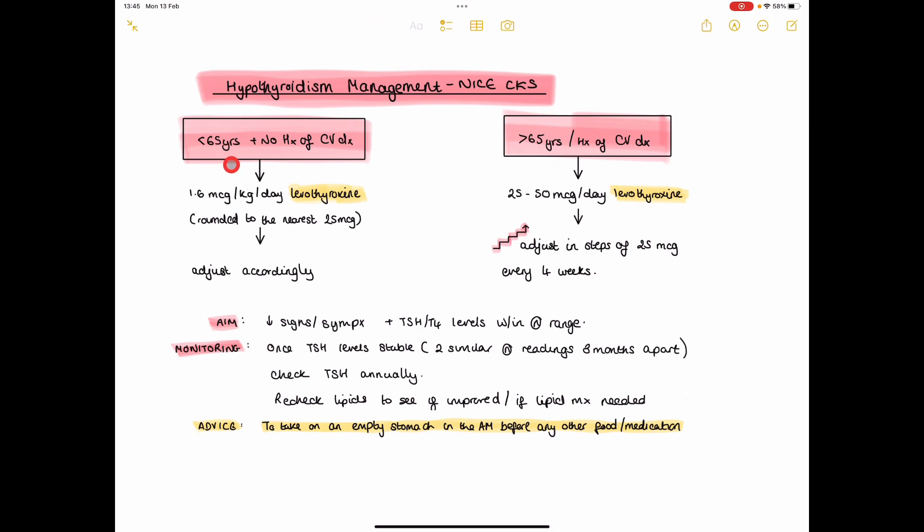If the patient is less than 65 years old and has no history of cardiovascular disease, then you start them on 1.6 micrograms per kilogram per day of levothyroxine, rounded to the nearest 25 micrograms.